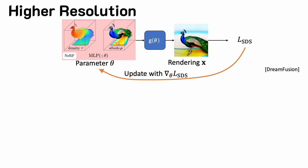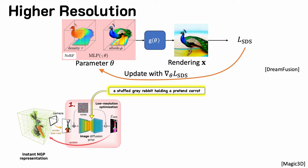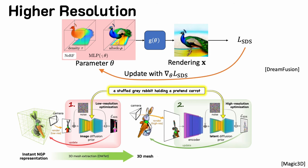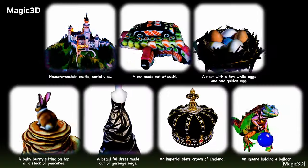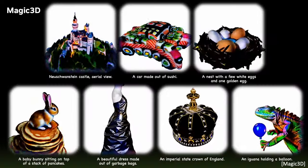Rendering a high-resolution image from a radiance field is computationally expensive. Magic3D addressed this problem by first training a low-resolution radiance field, extracting the 3D mesh, and continuing to refine the 3D mesh with SDS updates. The two-stage approach gives us high-resolution 3D mesh models.